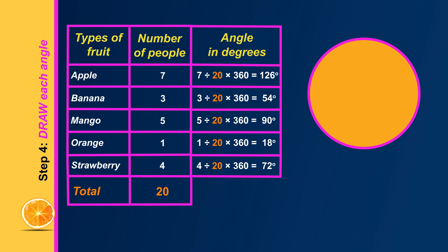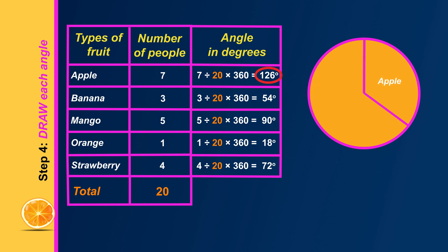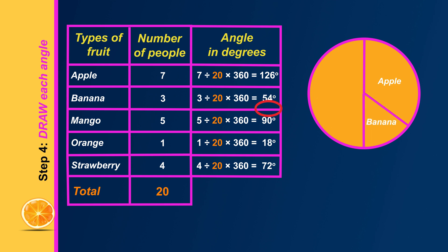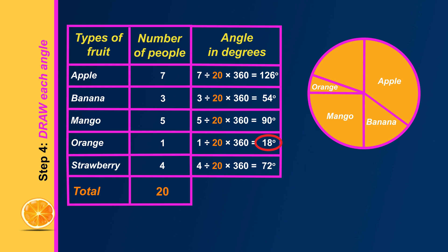Now in step four we draw the angles in the circle. First draw a starting line. The angle for apple is 126 degrees — halfway between a right angle and a straight angle is 135 degrees, and the apple angle is a bit smaller than that. Using a protractor and a ruler, draw the sector that represents apple. The angle for banana is 54 degrees — half a right angle is 45 degrees, and the banana angle is slightly larger than that. Using a protractor and a ruler, draw the sector that represents banana. This is the starting line for mango. Mango is 90 degrees — that's a right angle. The last angle to measure is 18 degrees for orange. The remaining sector is for strawberry. Once we write a title for the circle graph, we have finished.